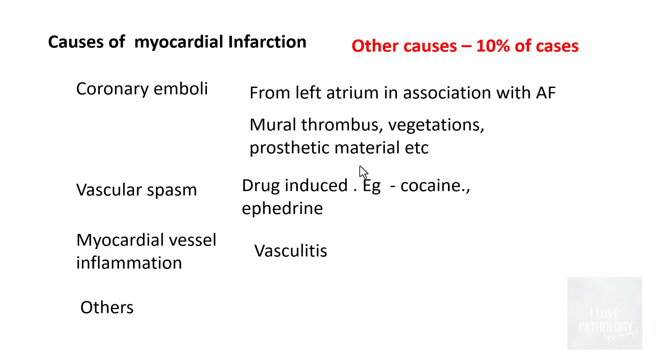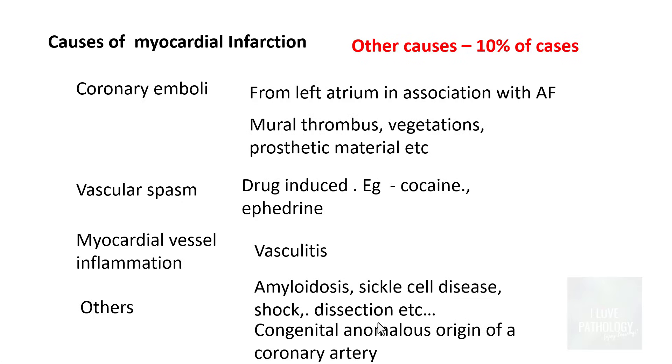Other not very common causes include amyloidosis, sickle cell disease, Takayasu, or even dissection of aorta. Very rarely, even congenital anomalous origin of a coronary artery can be a cause of myocardial infarction.